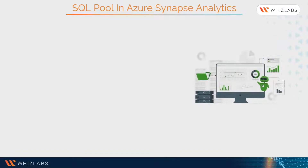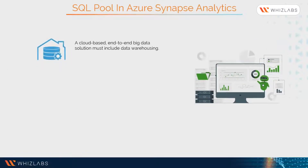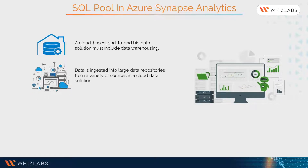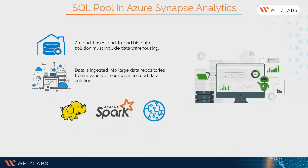A cloud-based end-to-end big data solution must include data warehousing as a crucial part. Data is ingested into large data repositories from a variety of sources in a cloud data solution. Hadoop, Spark, and machine learning algorithms prepare and train data after it is stored in a big data store. When the data is ready for advanced analysis, a dedicated SQL pool queries the huge data storage with PolyBase.